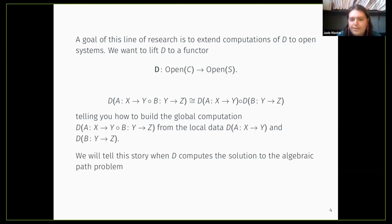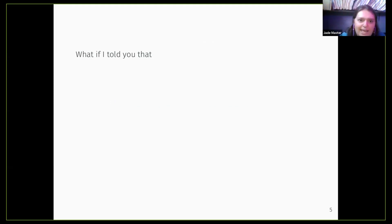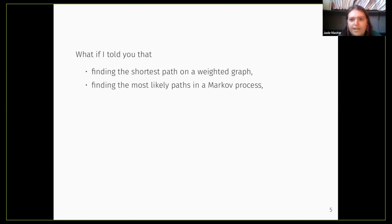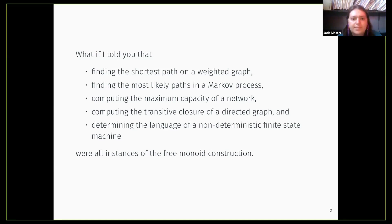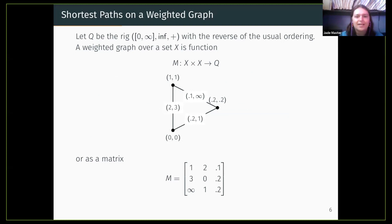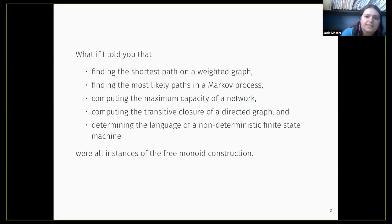We're going to talk about this in the situation when D computes the solution to the algebraic path problem. What if I told you that finding the shortest path on a weighted graph, finding the most likely paths in a Markov process, computing the maximum capacity of a network, computing the transitive closure of a directed graph, and determining the language of a non-deterministic finite state machine were all instances of the free monoid construction? All this can be captured in the same framework. To explain the algebraic path problem, I'll start with finding the shortest paths on a weighted graph.